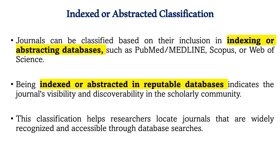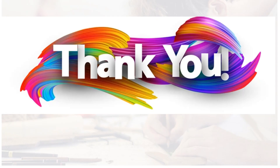The last classification is on the basis of indexing or abstracting. Many journals are classified based on how they are indexed in different indexing databases such as PubMed, Medline, Scopus, and Web of Science. Whenever a journal is indexed in a reputed database, it increases the journal's visibility, discoverability, and reputation. One more classification not yet discussed is on the basis of language — journals can be classified by the language in which they publish, such as English-language journals or local-language journals.